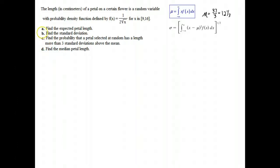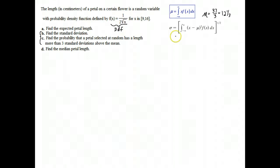We're looking at how standard deviation works in a calculus problem. We have this probability density function 1 over 2 root x, and we want to find the standard deviation. The formula for standard deviation involves the mean, and in a previous video we found that the mean was 37 over 3. Standard deviation is a measurement of spread.